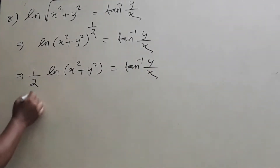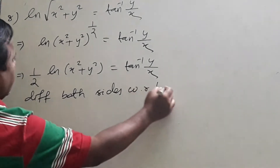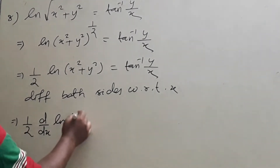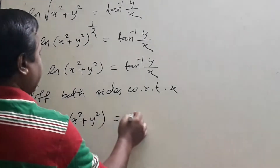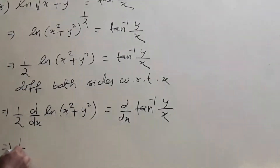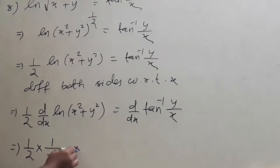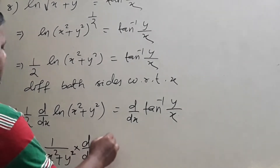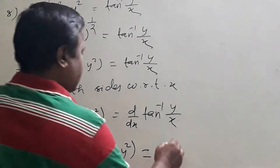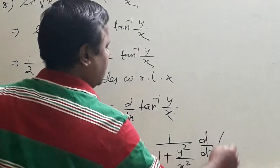Differentiating both sides with respect to x: (1/2) · d/dx [ln(x² + y²)] = d/dx [tan⁻¹(y/x)]. This becomes (1/2) · (1/(x² + y²)) · d/dx(x² + y²) = 1/(1 + y²/x²) · d/dx(y/x).